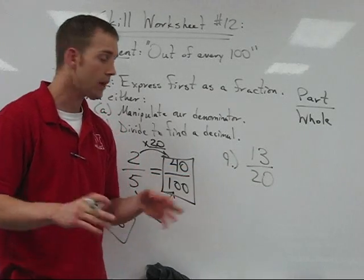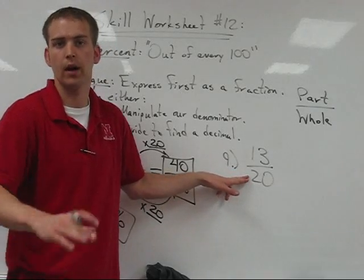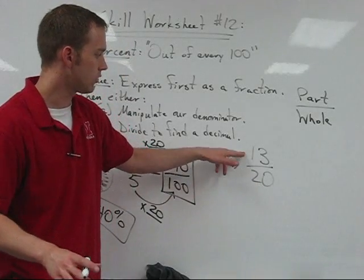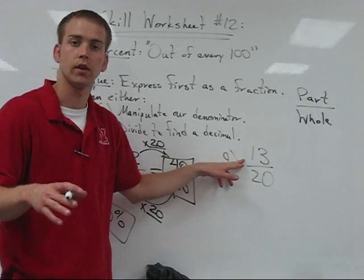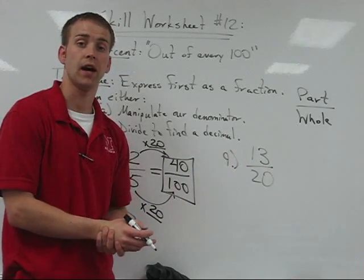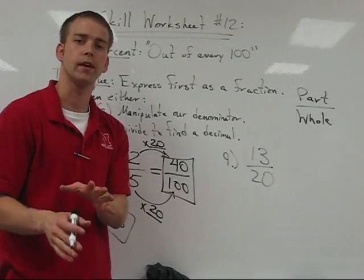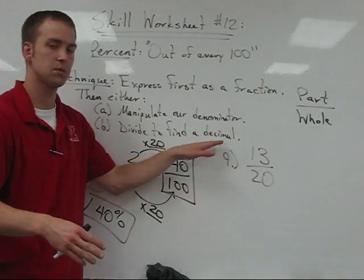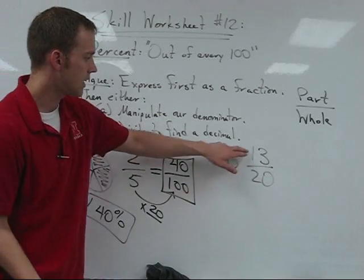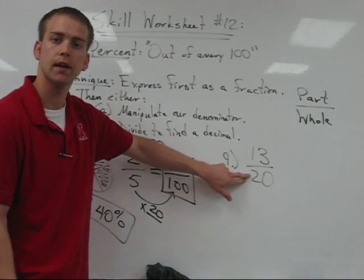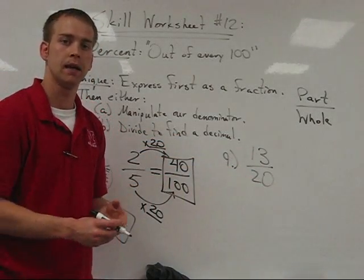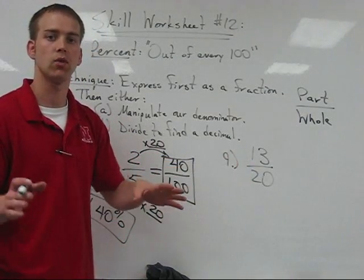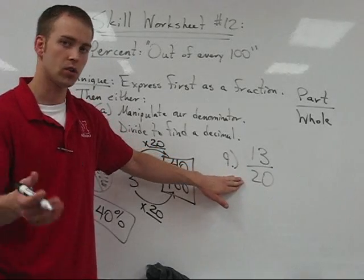A lot of you right now are saying we could turn 20 into 100. As a matter of fact, taking 20 times 5 would turn it into 100. We'd have to take the numerator times 5, which would be 13 times 5 is 65. Now I kind of spoiled the problem for you, but what I wanted to do was demonstrate the second technique, which is to divide to find a decimal. This is something we've done in class before. It consists of taking the numerator and dividing by the denominator.